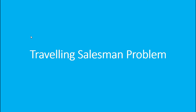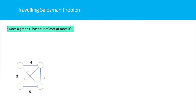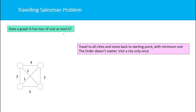The Traveling Salesman Problem: given a graph G, does it have a tour of cost at most K? The salesman has to travel all the cities, starting from a given point, visiting all cities, and coming back to the starting point with minimum cost. He can visit a city only once but must visit all cities and return to the starting point.